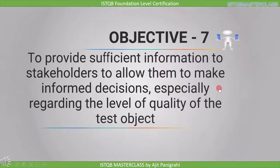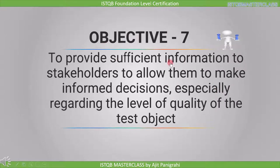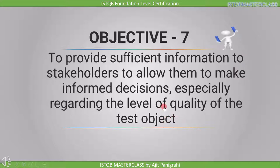The seventh objective is to provide sufficient information to stakeholders to allow them to make informed decisions, especially regarding the level of quality of the test object. When we find defects, it is not necessary that we fix all of them before release. What we can do is provide sufficient information to the stakeholders so that they can take decisions based on the defects and the risk associated with them.